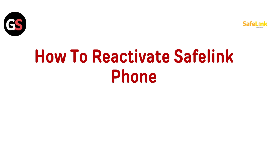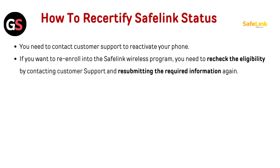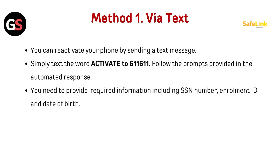Hello everyone, today in this video we are going to talk about how to reactivate a SafeLink phone. How to re-certify SafeLink status — you need to contact customer support to reactivate your phone. If you want to re-enroll into the SafeLink wireless program, you need to re-check the eligibility by contacting customer support and re-submitting the required information again.